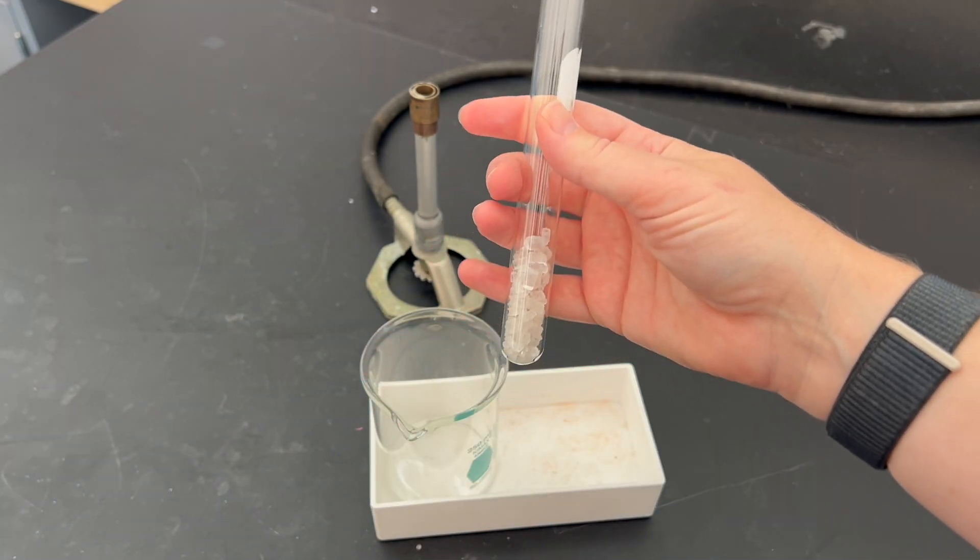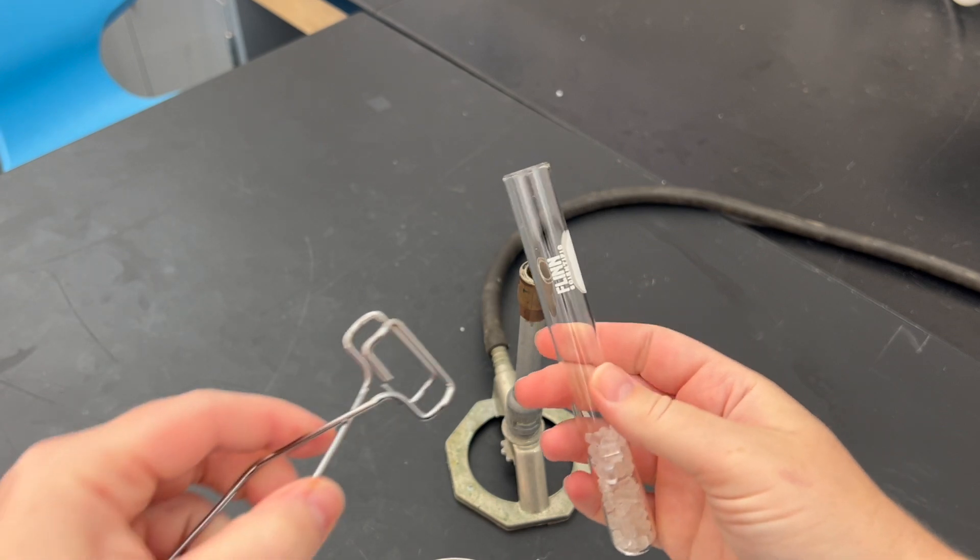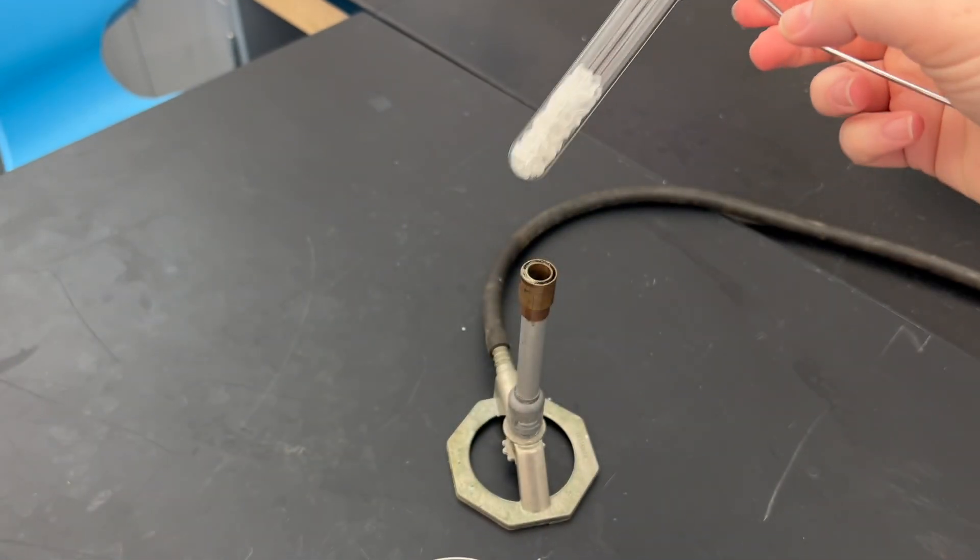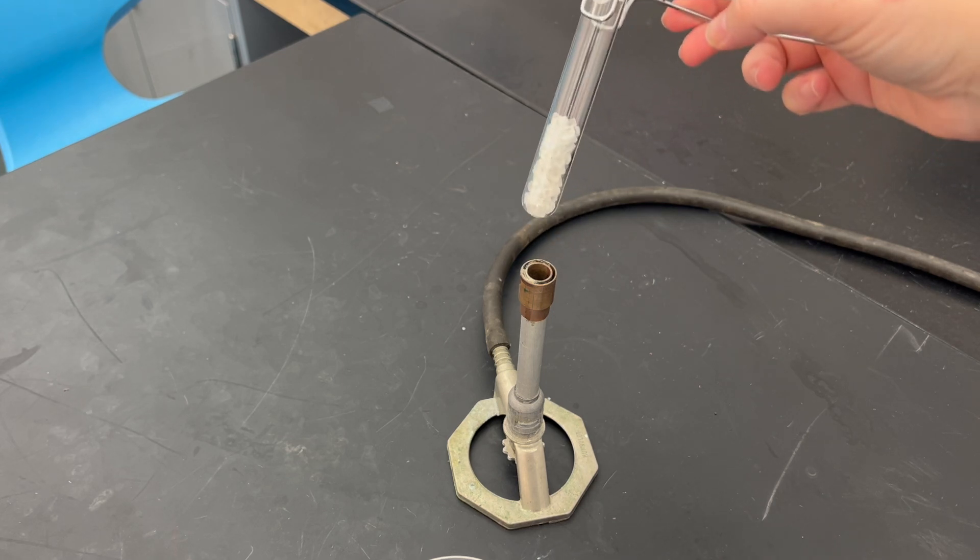Now you're going to heat this with the Bunsen burner. Using your test tube clamps, clamp it and make sure it's secure. Point this away from any person and heat it up until it's melted. Then you'll put it into your beaker to cool on the lab bench.